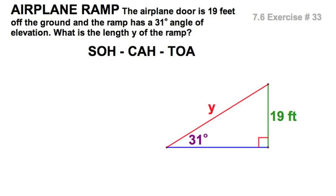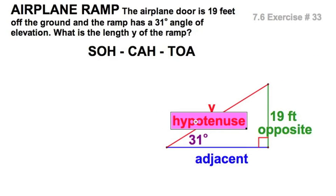Now we're going to use a trig function. I'm not going to tell you which one, but that's what you're supposed to figure out. I can see here, relative to my given angle, 31 degrees, that's the angle of incline here. This would be the adjacent side, this 19 would be the opposite side, and the y, what we're looking for, is the hypotenuse.